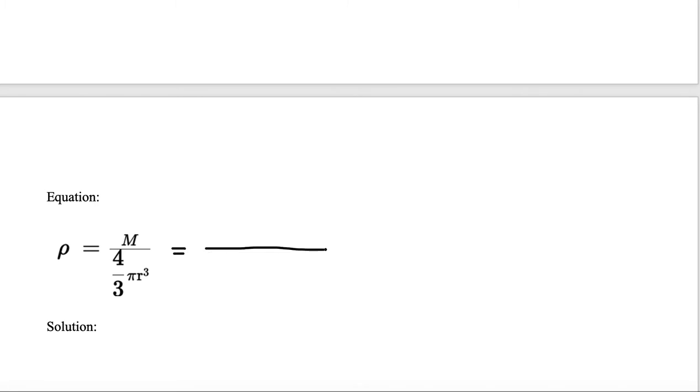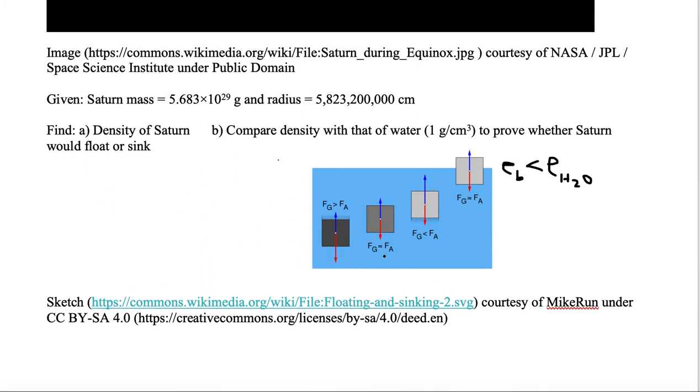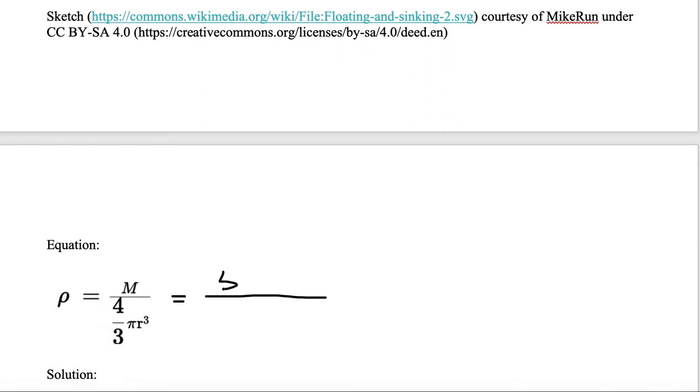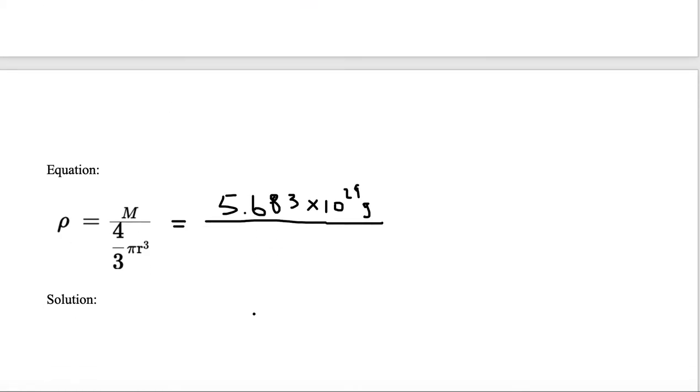So we have mass on the top, and the mass that we're given is 5.683 times 10 to the 29th grams. And then we're given the equation of a sphere, the volume of a sphere,